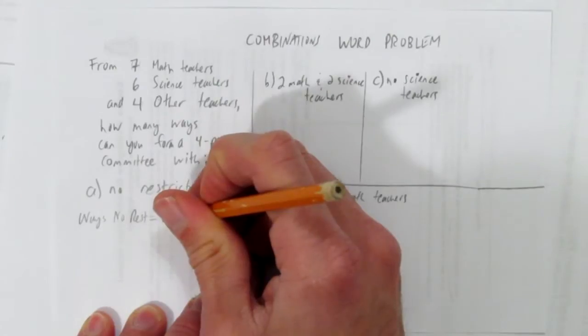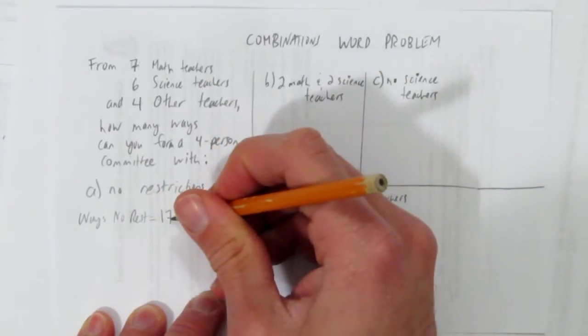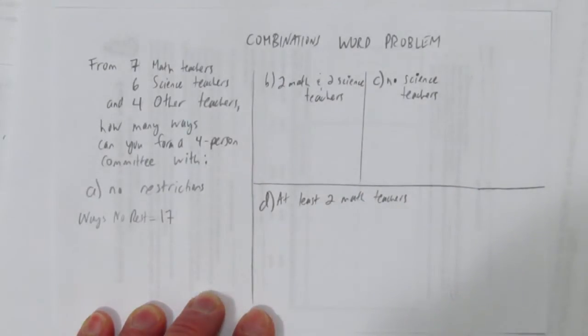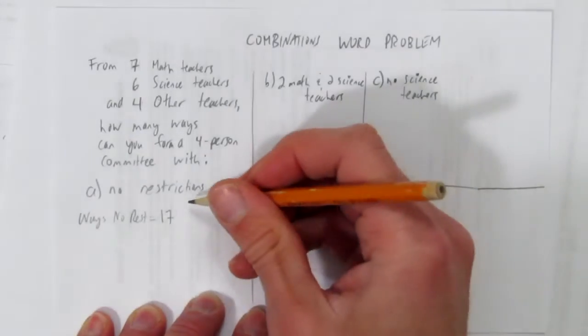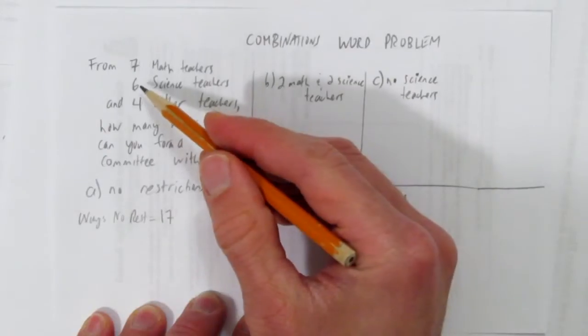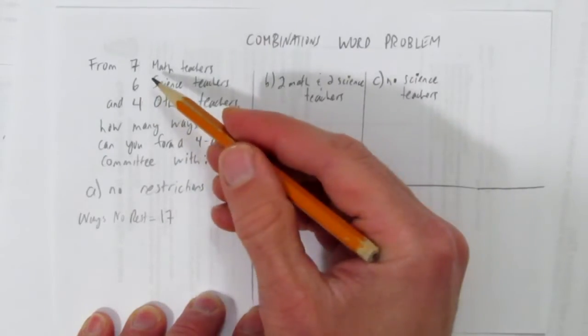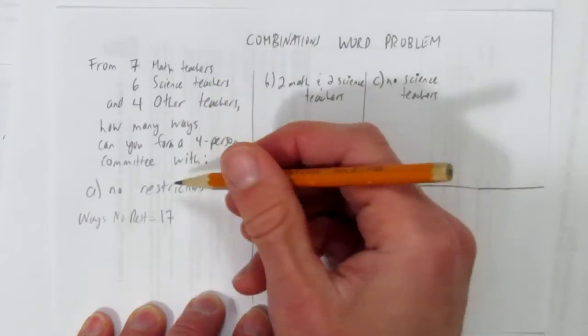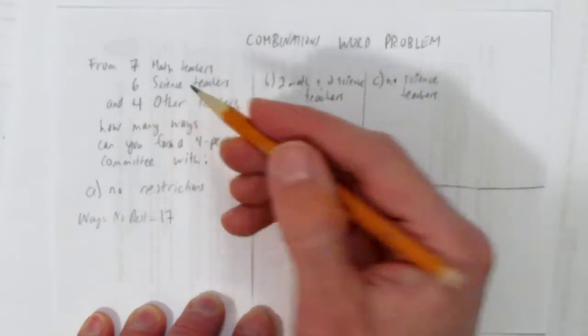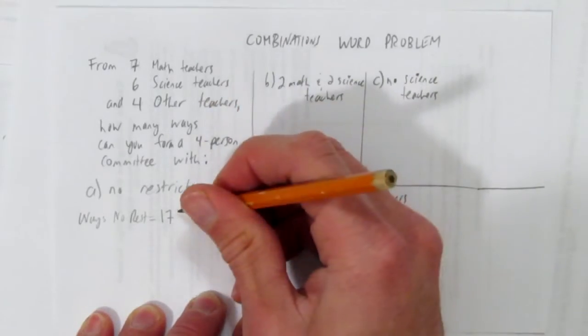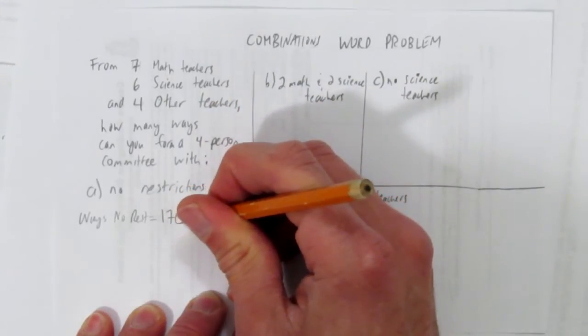So we choose equally, randomly, from our seventeen people, our four person committee. The question is, is it permutations or combinations? The answer is combinations, because it doesn't matter what order you pick the teachers. You could have picked the two math teachers first, then the two science teachers, or vice versa. The main thing is, order doesn't matter. And if order doesn't matter, it's combinations.